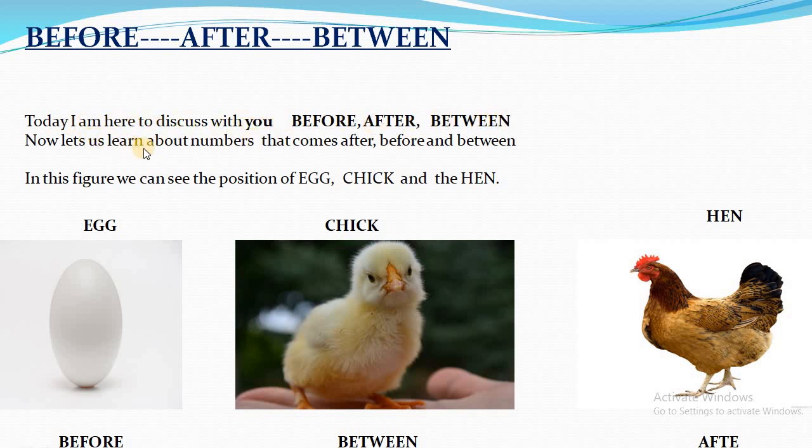Now let us learn about numbers that come after, before and between. In this figure, we can see the position of egg, chick and hen. In this picture we can see three pictures of egg, chick and hen. These three are different stages.